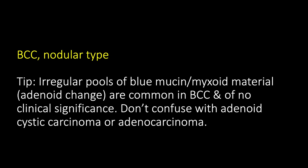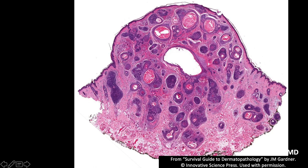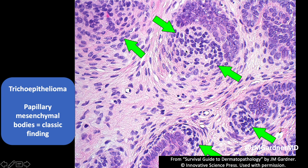This next case looks kind of like a BCC from low power and has some cystic spaces filled with keratin, but looking closer there's a funny cellular stroma with rounded to oval stromal cells — keratin-negative, so not epithelial. These rounded stromal cells are pushing into the basaloid nest — that's a papillary mesenchymal body, recapitulating the hair papilla that bulges into the germinative cells of a normal hair follicle. This is a trichoepithelioma, a benign hair follicle tumor. If you see papillary mesenchymal bodies, think trichoepithelioma, not BCC — particularly in younger patients without much sun damage.